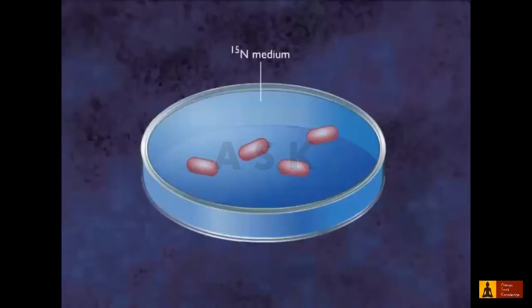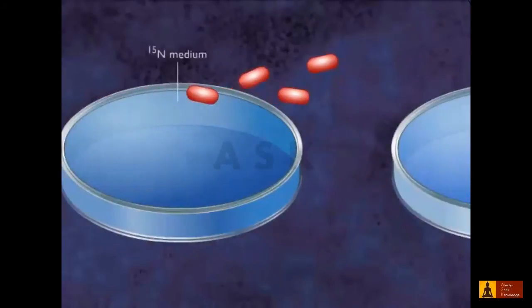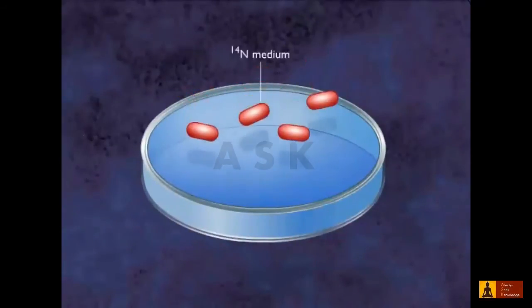The DNA in these cells therefore contained heavy N15 nitrogen. The cells were then transferred to a new medium containing the normal lighter isotope, N14.